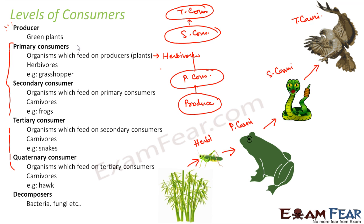If omnivores feed on other animals, depending on which animal they are feeding upon, they can be a secondary consumer or a tertiary consumer. So it completely depends on what exactly the omnivore is feeding on — based on that, it can be a primary, secondary, or tertiary consumer.